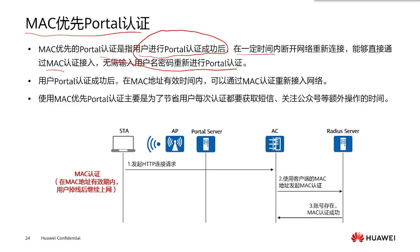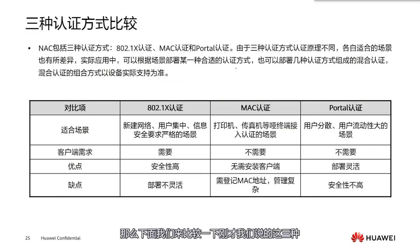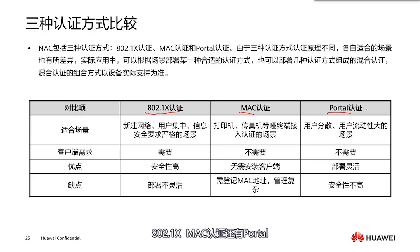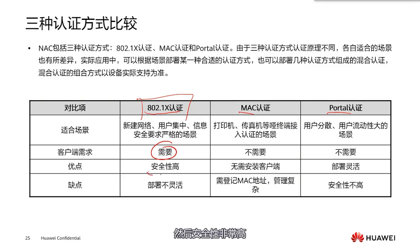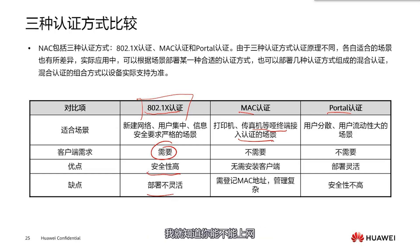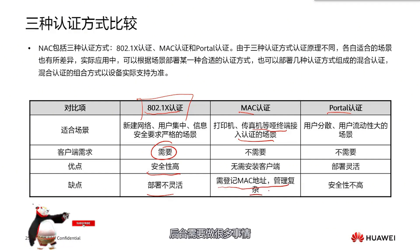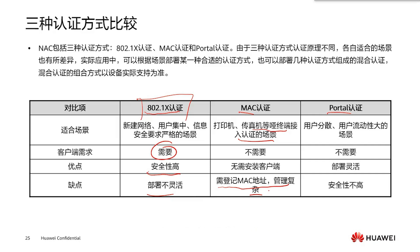Now let's compare the three different authentication methods: 802.1x, MAC authentication, and portal. 802.1x is relatively newer and generally has higher requirements for devices — it has specific requirements for the client and offers very high security, but it is not flexible enough in deployment. MAC authentication's most important aspect is that it supports dumb terminal logging, requiring no interaction — just send your MAC address and the system determines access. But the backend has a lot of work: you at least need to register the MAC addresses, and if there are many devices, registering them can be quite cumbersome.